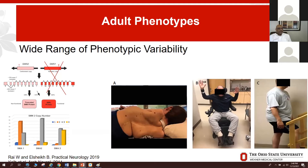The SMN2 copy number is considered the main determinant of the phenotype. In the classic classification from SMA type 1 through type 4, infants with SMA type 1 usually have two copies of SMN2, whereas those with SMA type 2 typically have around three copies, three to four copies in SMA type 3, and four or more SMN2 copies in adult-onset ambulatory patients.